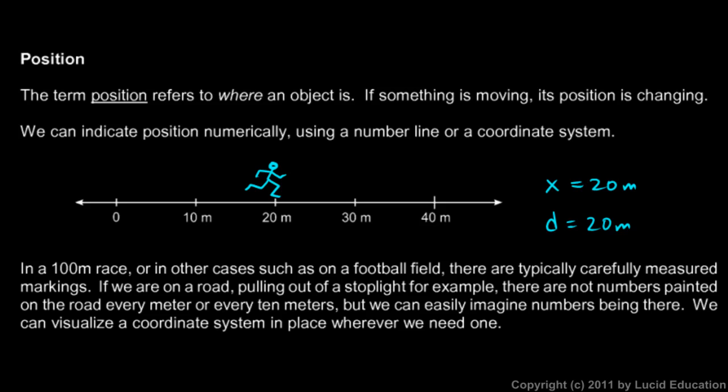The exact variable that you use isn't critical. It's just important that you understand that we can indicate the position mathematically as a number by visualizing the motion along this coordinate system. And whenever we have something moving, like this guy running, even if there's not a physical number line lying there, we can imagine one being there.